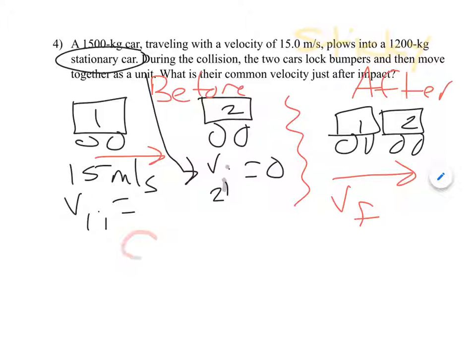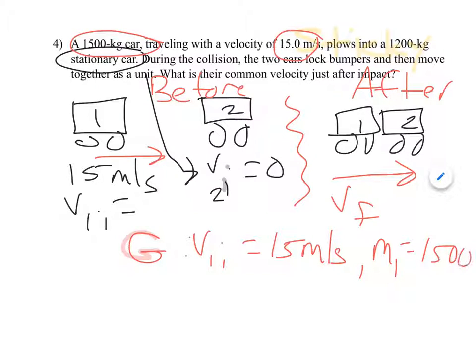So in my given, I'm going to have V1I is equal to 15 meters per second. It's 1500 kilograms, so that must be M1. So M1 equals 1500 kilograms. And then the other car is 1200, so M2 is equal to 1200 kilograms.